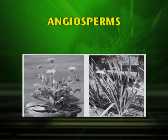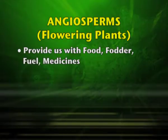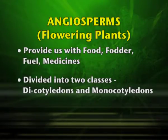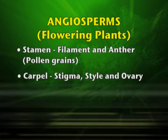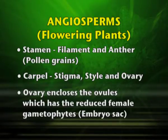Angiosperms are known as flowering plants, and they are of immense importance — providing food, fodder, fuel, and medicines. They are divided into two classes: dicotyledons, which have two cotyledons, and monocotyledons, which have one cotyledon. The male sex organ is the stamen and the female sex organ is the pistil or carpel. The stamen has a filament and anther; the pistil is made up of stigma, style, and ovary. The ovary encloses the ovule, which contains the reduced female gametophyte referred to as the embryo sac.